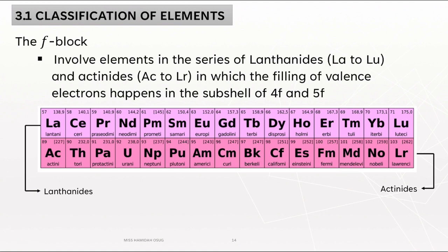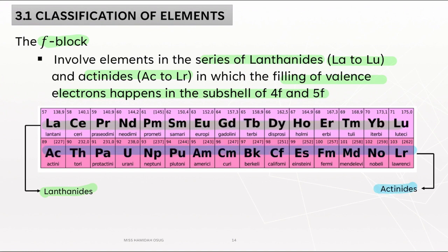And finally, for the F block, it involves the elements in the series of lanthanides and also actinides, in which the filling of valence electrons happens in the subshells of 4F and also 5F.